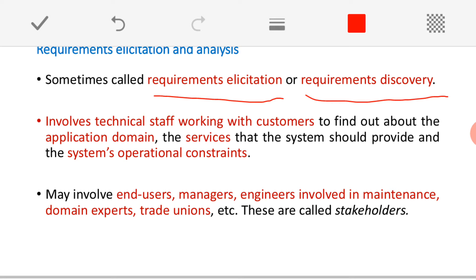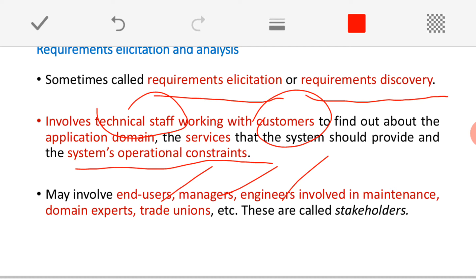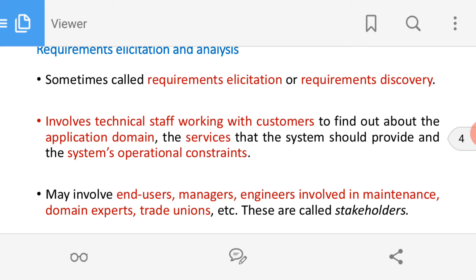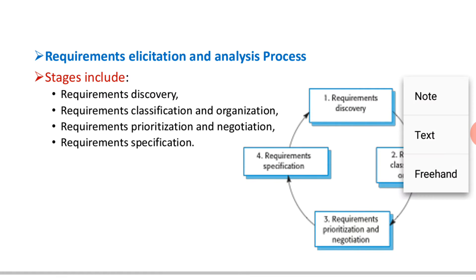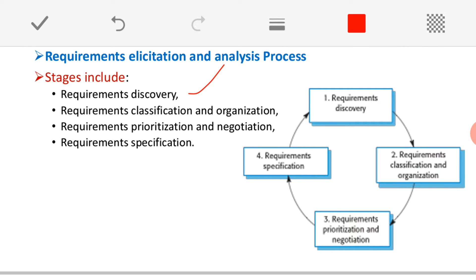Requirement elicitation, or requirement discovery, involves technical staff meeting with customers and a variety of stakeholders to collect application domain requirements, different sorts of services and functionalities, and system operational constraints. End users, managers, engineers, domain experts, and many more people are involved as stakeholders. Within requirement elicitation and analysis, there are four stages: requirement discovery, requirement classification and organization, requirement prioritization and negotiation, and requirement specification.